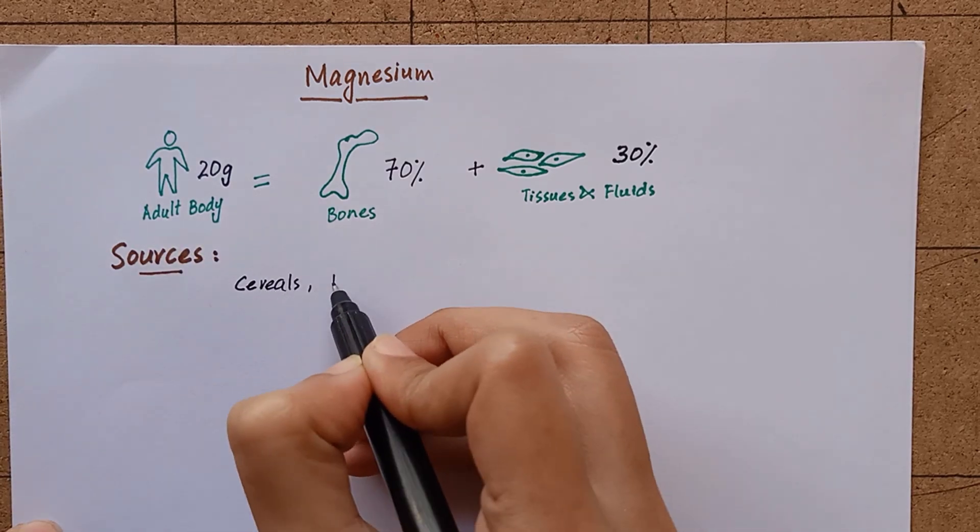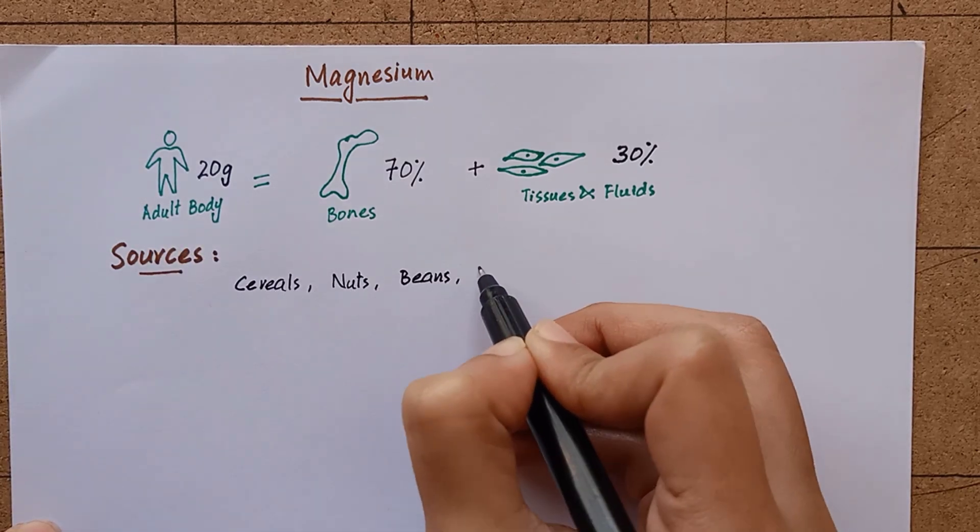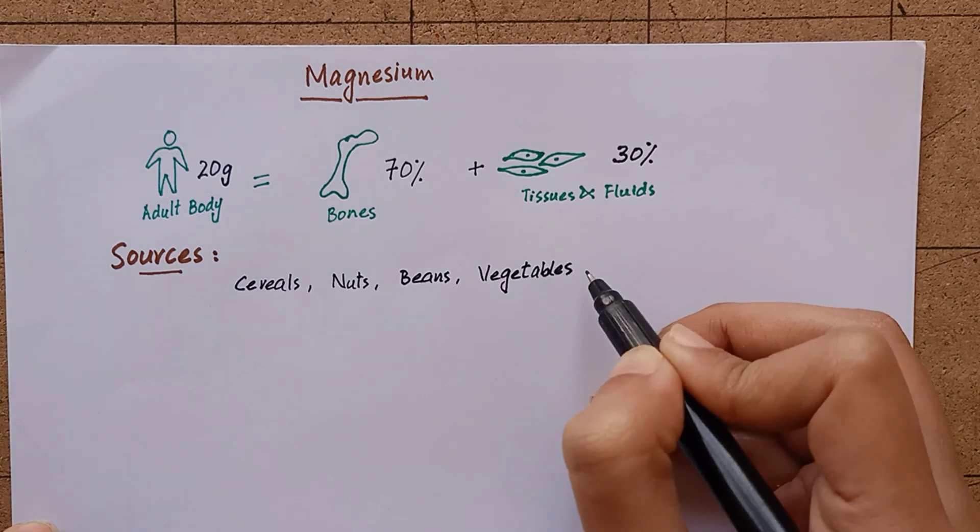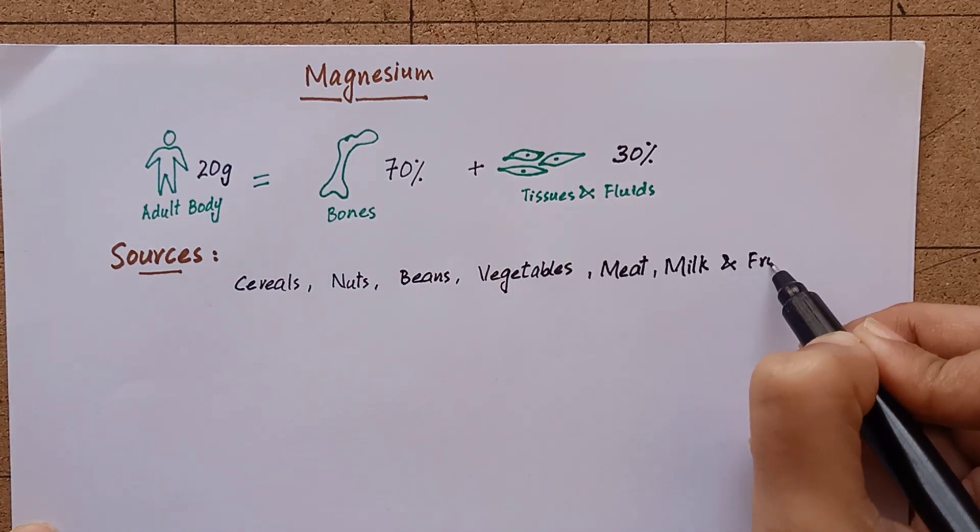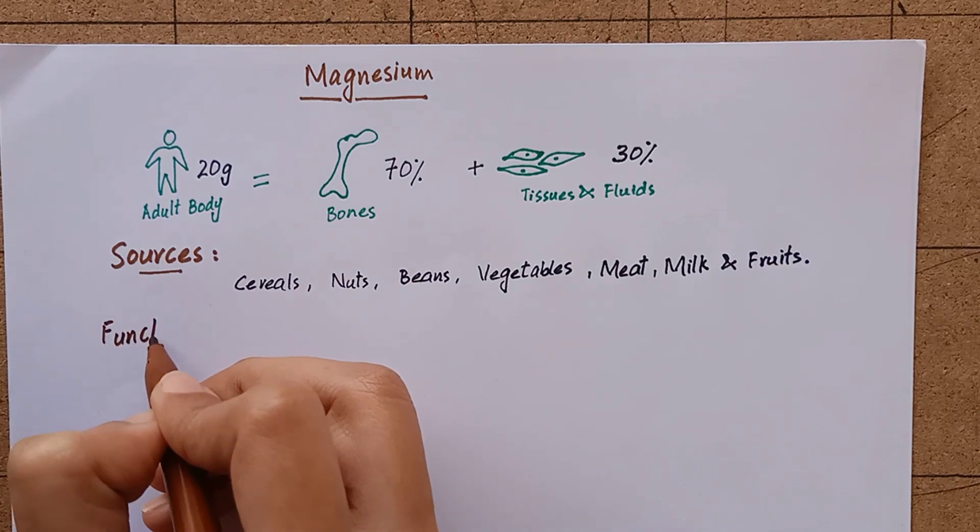Magnesium is found in cereals, nuts, beans, vegetables like cabbage and cauliflower, meat, milk, and fruits.